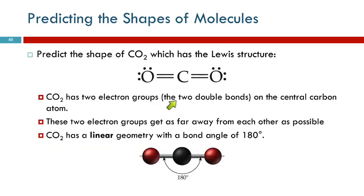Let's look at carbon dioxide. Here's the Lewis structure for carbon dioxide. We look at the central atom and ask ourselves, how many electron groups are on the central atom? Well, here's a double bond — that's one group. And here's another double bond — that's two groups. So there are two electron groups on the central atom, and they are going to repel each other.